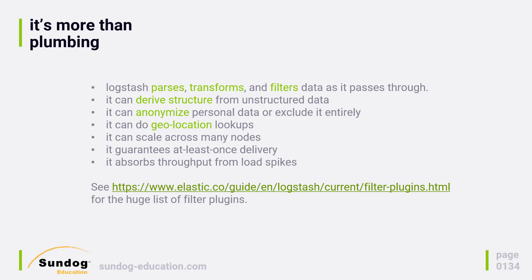Anonymizing or excluding personal data can be very important for legal reasons. If you want to make sure you're not transferring personally identifiable information around your network unnecessarily, that's a big deal. You can also do geo-location lookups — for example, Logstash can look at your access logs from a web server and automatically figure out where a request came from just based on the IP address that was logged.